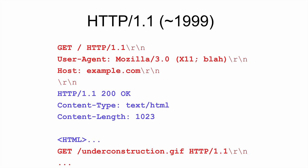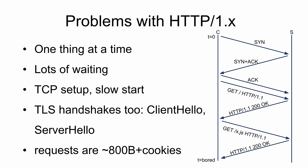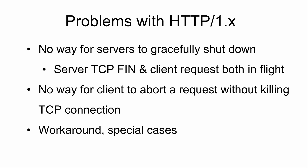This is what HTTP looked like in 1999. The problem is that HTTP 1.1 and 1.0 only really let you do one thing at a time, and there's lots of setup — setting up a new TCP connection is slow. There are lots of round trips involved, there's no way to gracefully shut anything down, and the protocol is basically just filled with nasty hacks and special cases from years of incompatibilities.